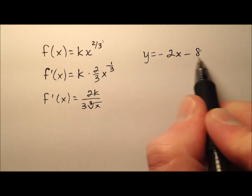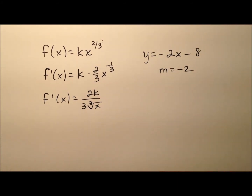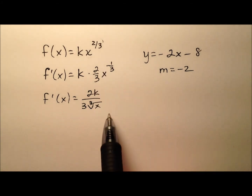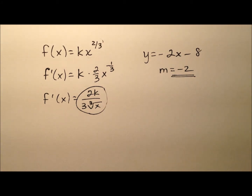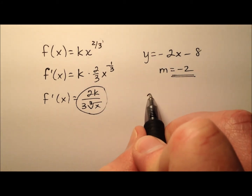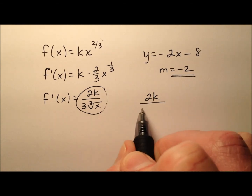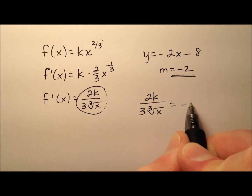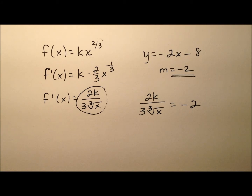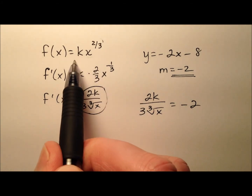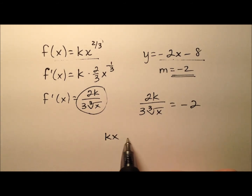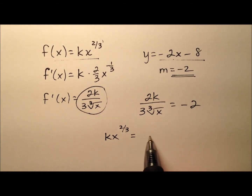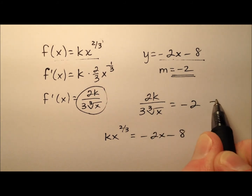We have the line here and we know its slope is negative 2. We have a few equations we can write. First, since the derivative gives us slope and the line's slope is negative 2, let's set them equal: 2k over 3 times the cubed root of x equals negative 2. Also, at the point of tangency the graph and the line intersect, so kx to the two-thirds equals negative 2x minus 8.